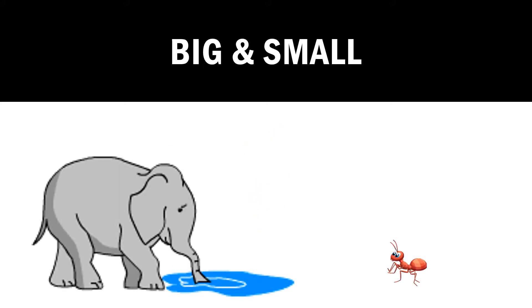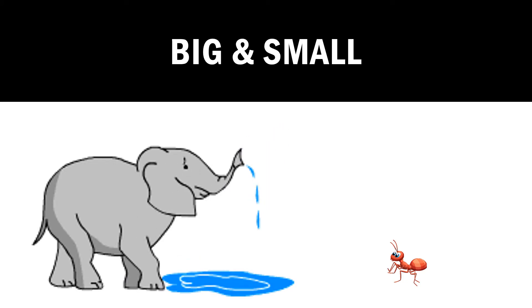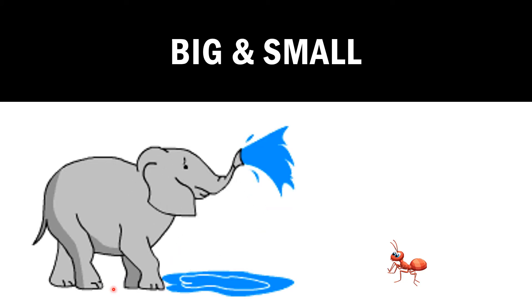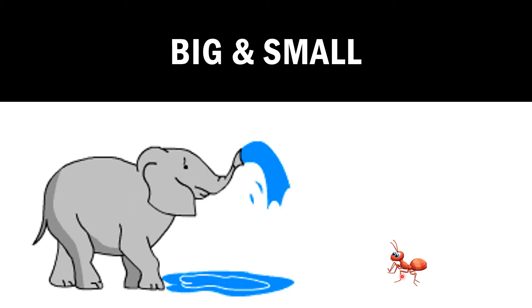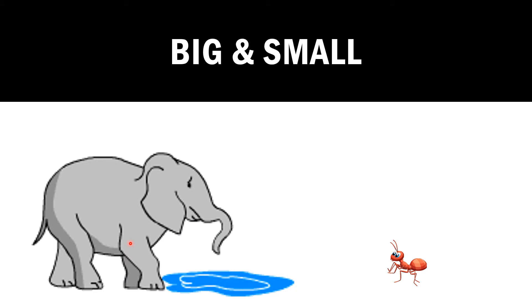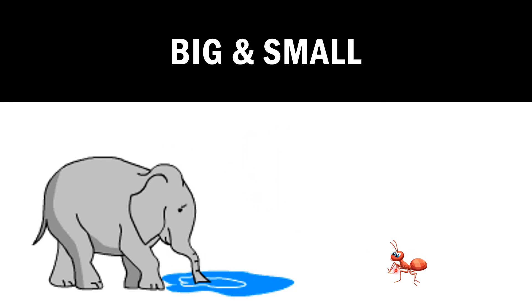Look at these two. What is this? It's a big elephant. And this one? Small ant. So, elephant — big. Ant — small.